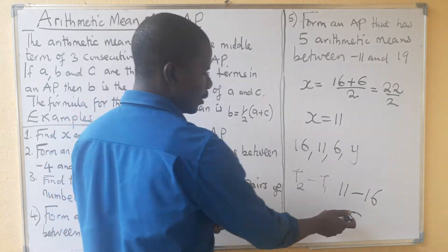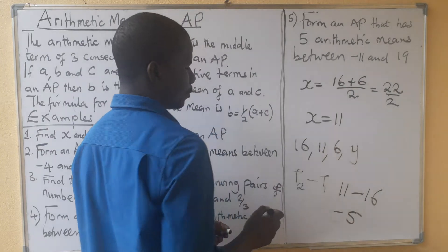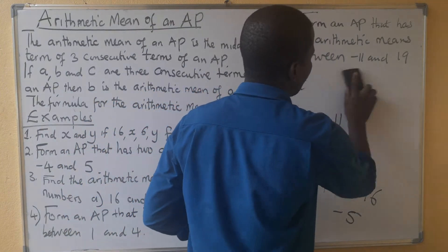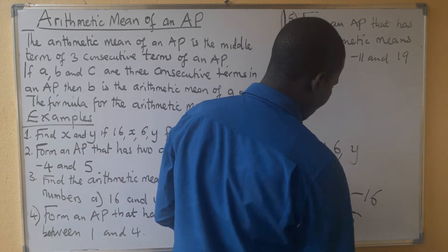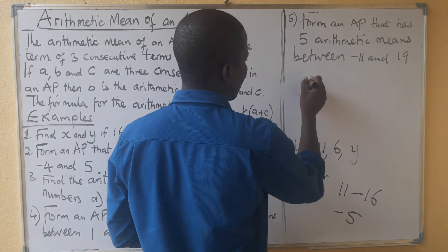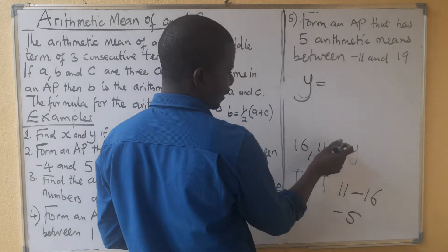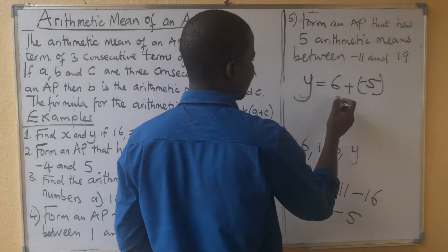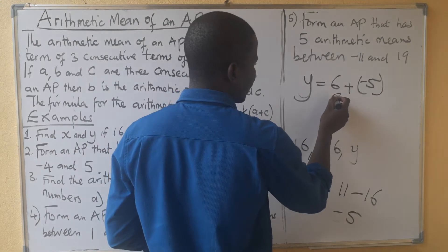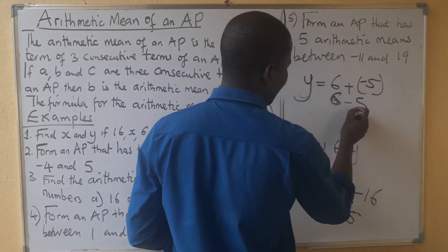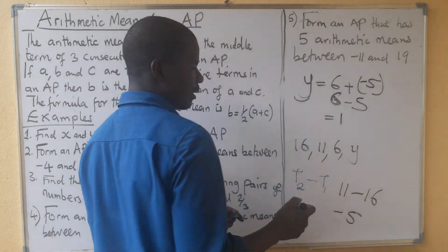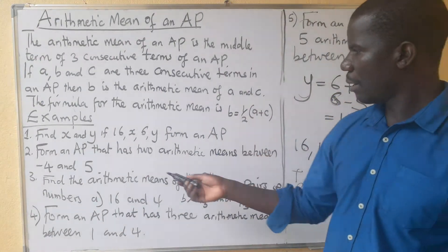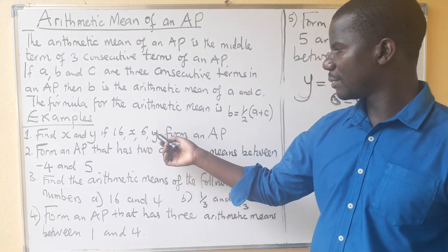For Y, we add the common difference of negative 5 to the previous term 6. So Y equals 6 minus 5, which gives us 1. The value of Y is 1. So we have the AP: 16, 11, 6, and 1.